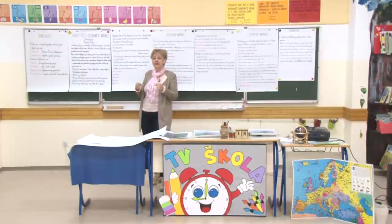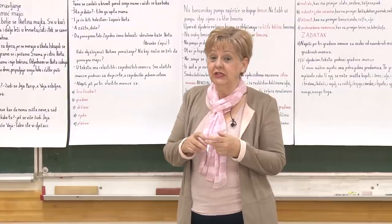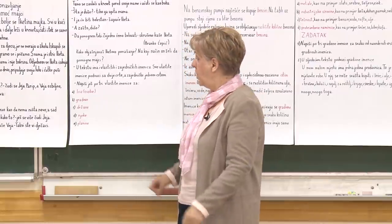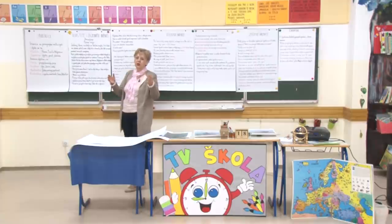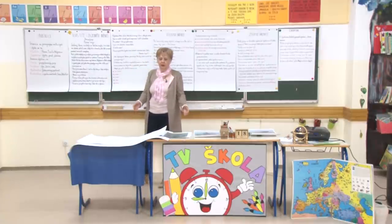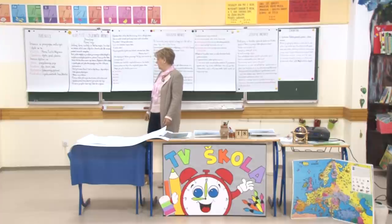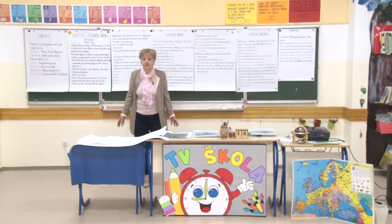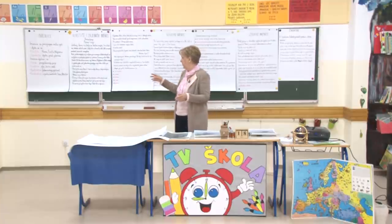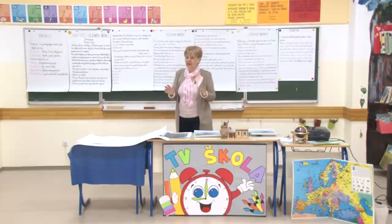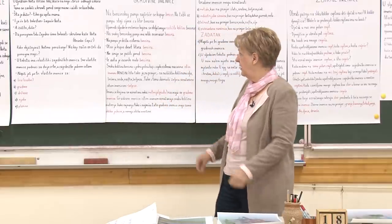U abstraktne imenice spadaju ljubav, mržnja, nježnost. U konkretne spadaju cipele, novčanik, Sara, Mostar. Sve su ovo imenice koje su dokazive, konkretne. A one abstraktne - ljubav - možemo dokazivati, ali uvijek će postajati dvojba da li jest ili nije. I stoje tako i sa imenicom mržnja i ostale.